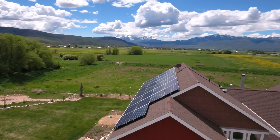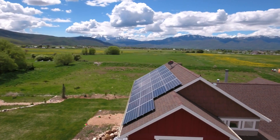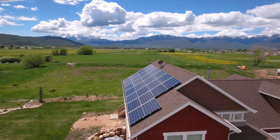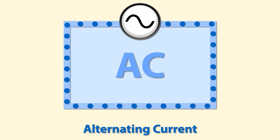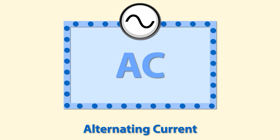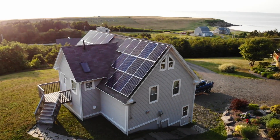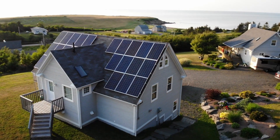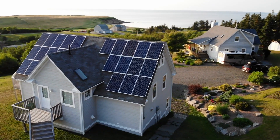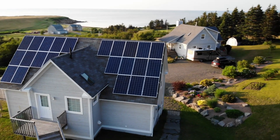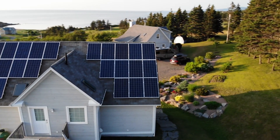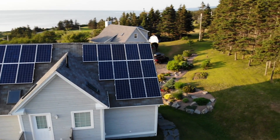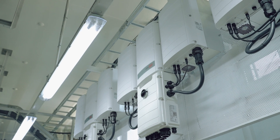However, most homes and buildings use AC electricity, which is a type of electrical current that alternates direction many times per second. Therefore, to use solar energy in homes and buildings, the DC electricity generated by solar panels needs to be converted into AC electricity. This is where an inverter comes in.